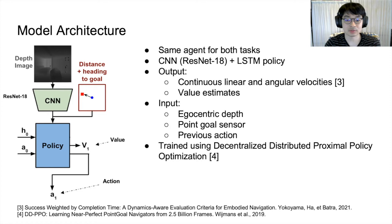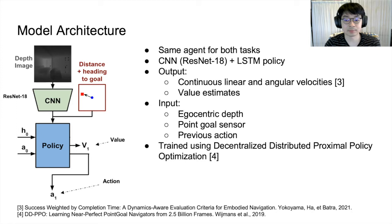We use the same agent for both social and interactive nav. Our model uses a CNN and an LSTM to output linear and angular velocities sampled from a Gaussian action distribution, as well as value estimates for use in deep reinforcement learning. As input, the agent uses just the depth channel of its egocentric view, as well as the point-goal sensor reading and the action that it took at the previous time step.